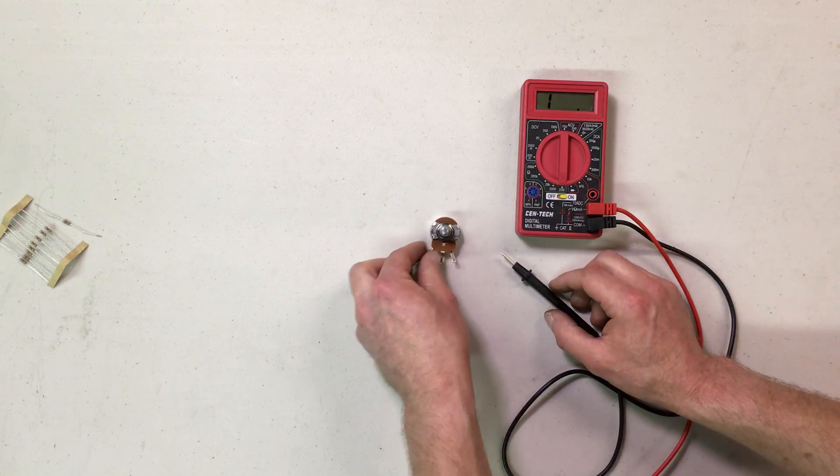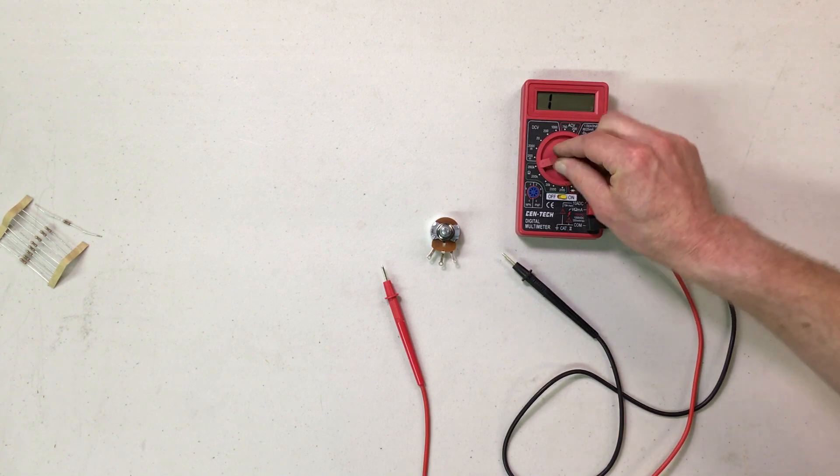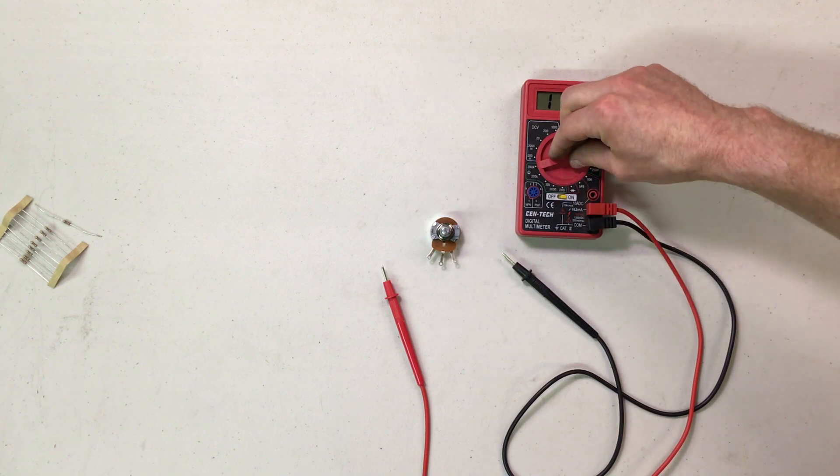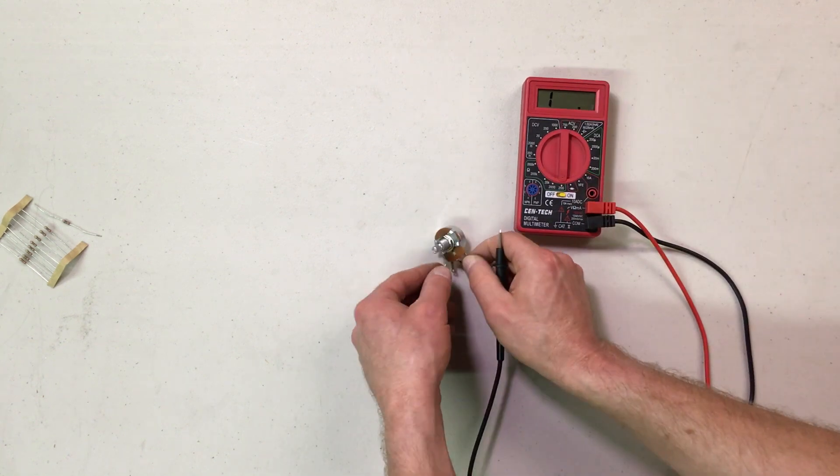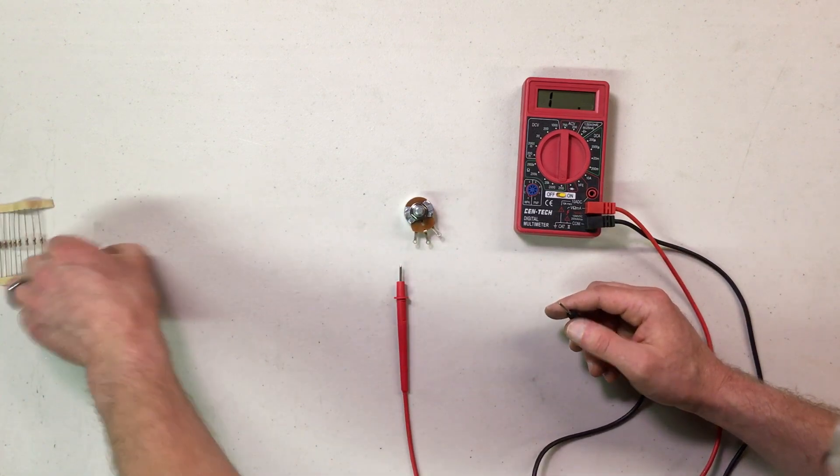So that's how to measure resistance. For greater resistances, just keep increasing the range here up to the 2000K. In this case, let's go back to this 10 ohm resistor over here.